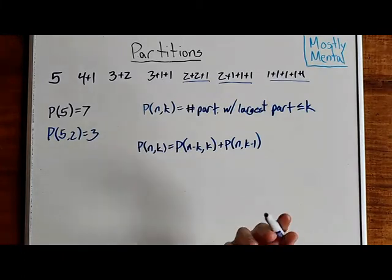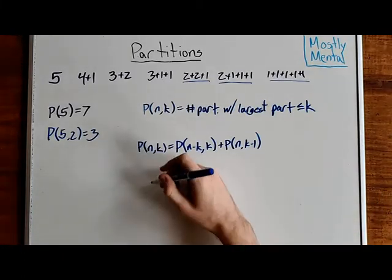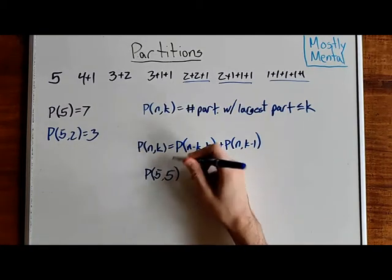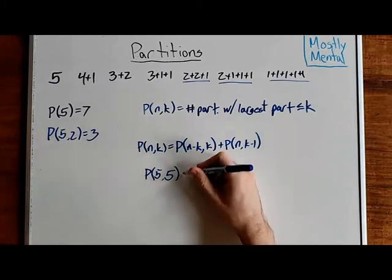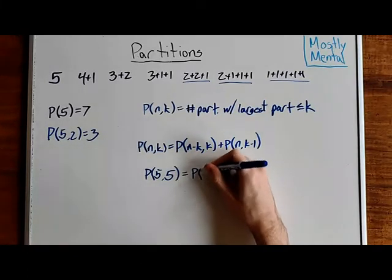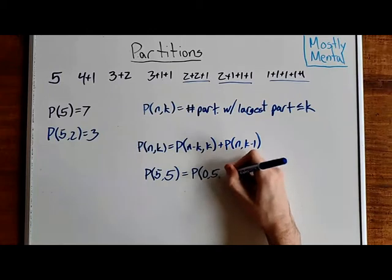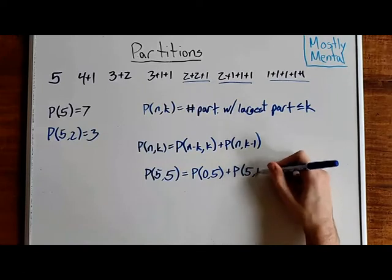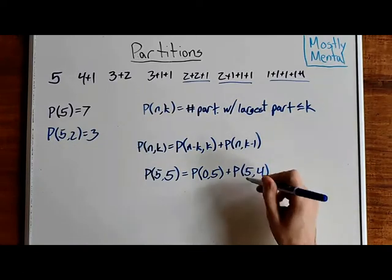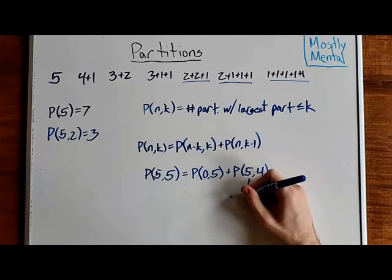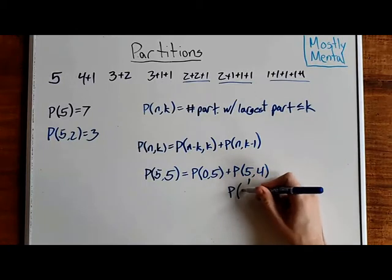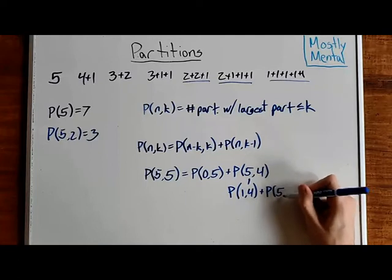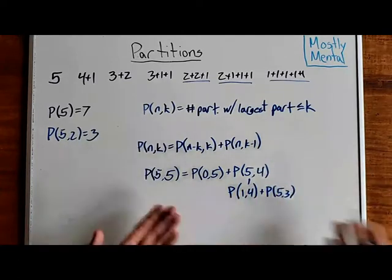And so, just to work out an example here, p of five, five, which is, again, p of five, is going to be p of zero, five, plus p of five, four. And, p of five, four, is just going to be p of one, four, plus p of five, three, and so on.